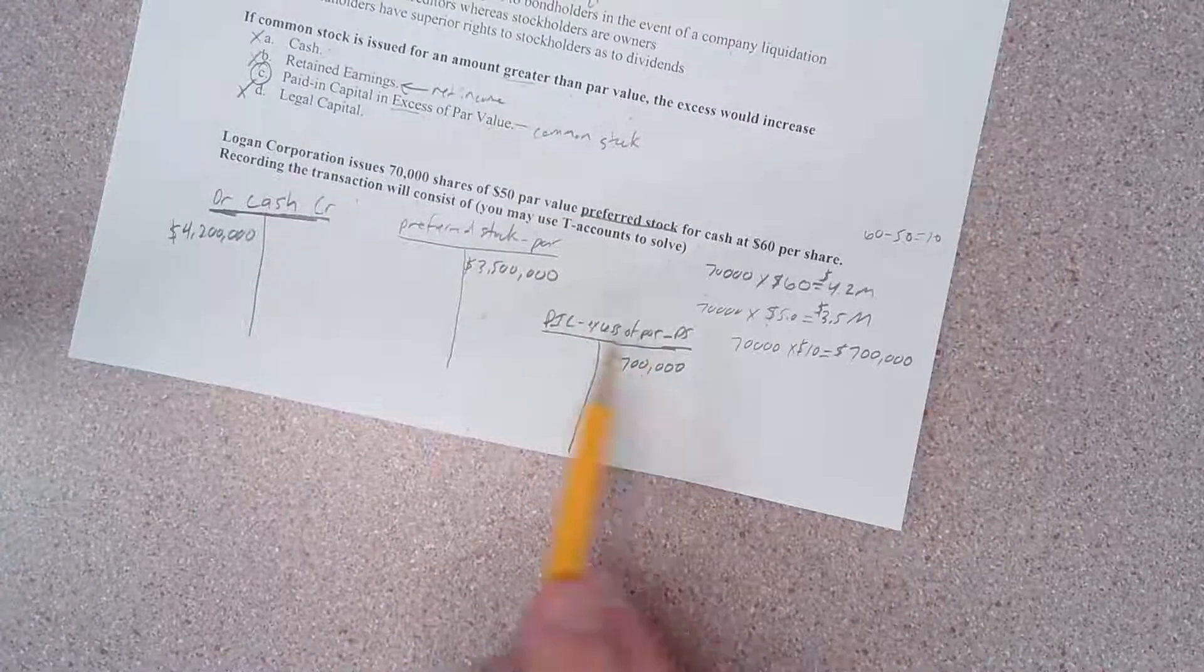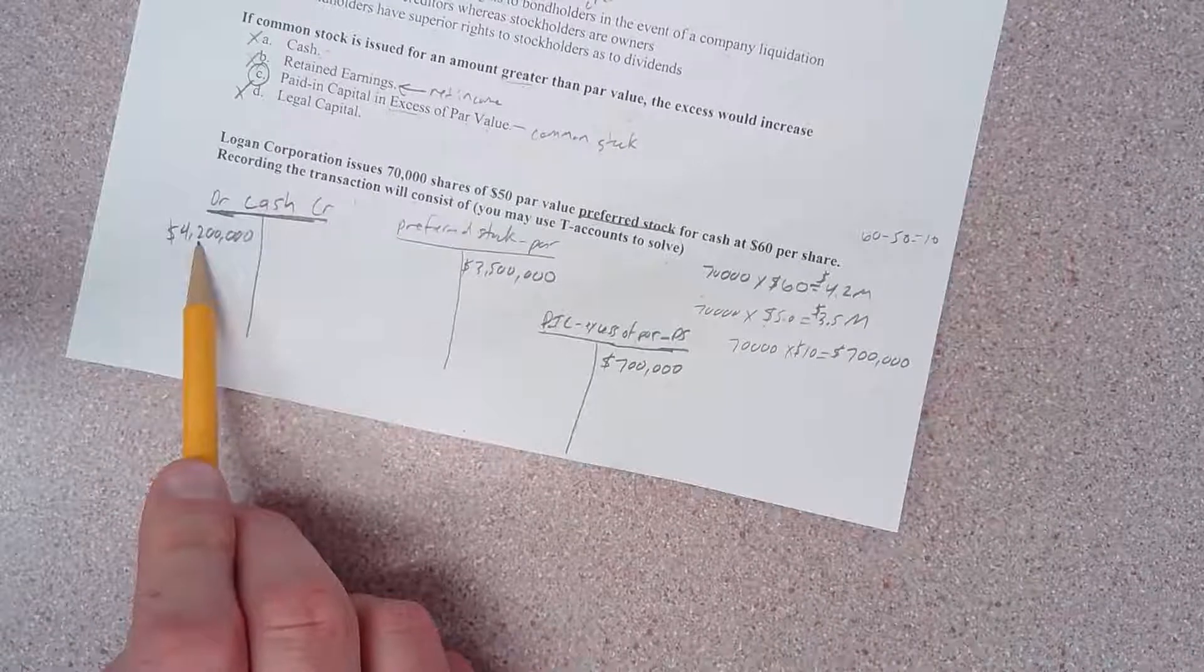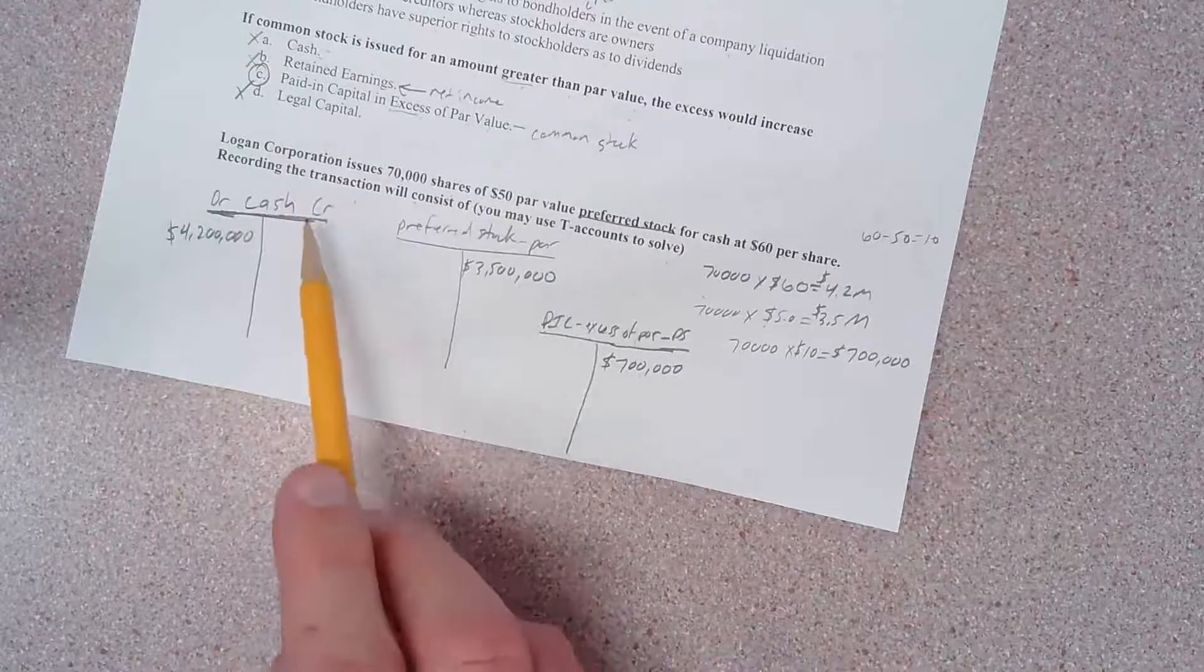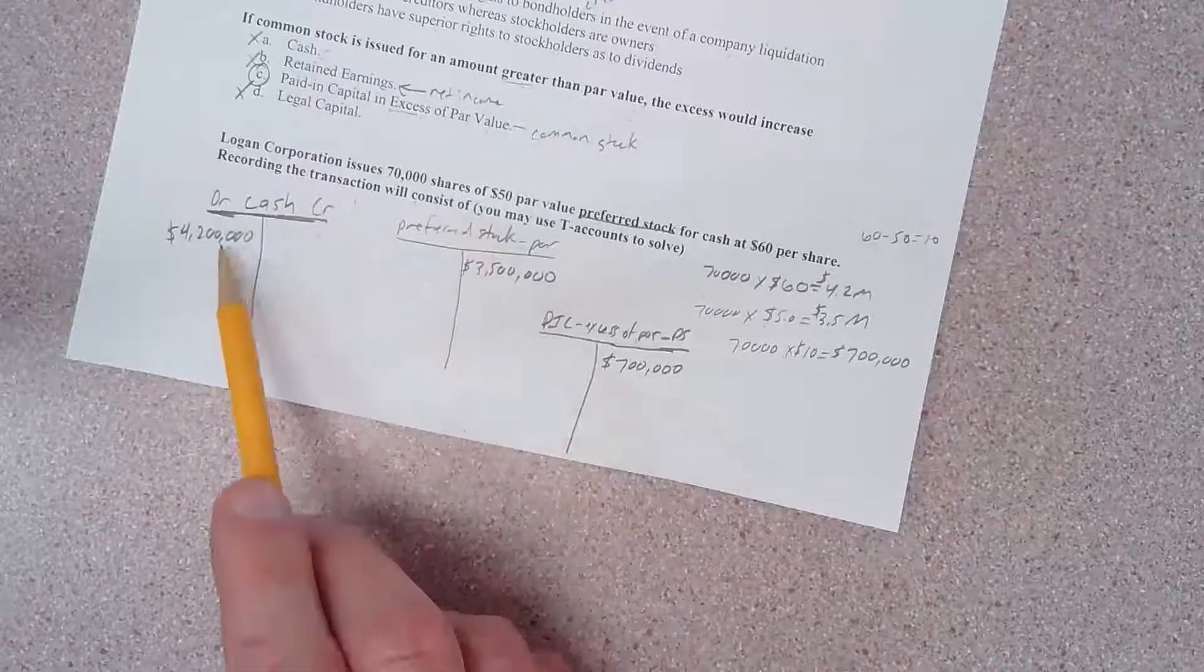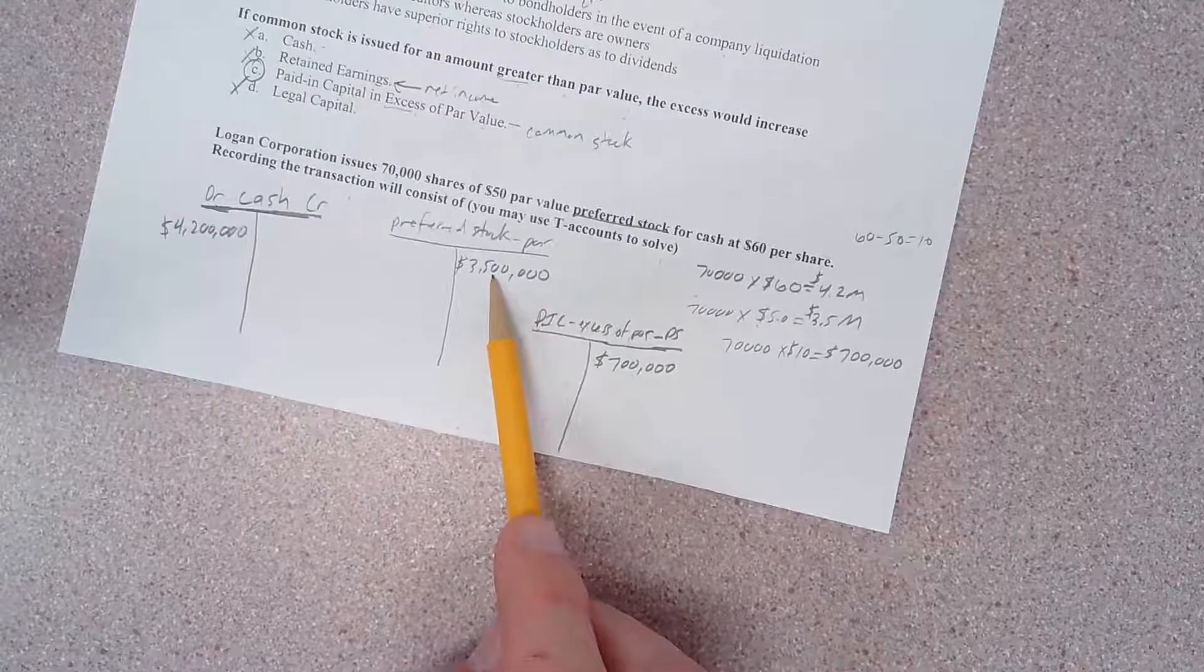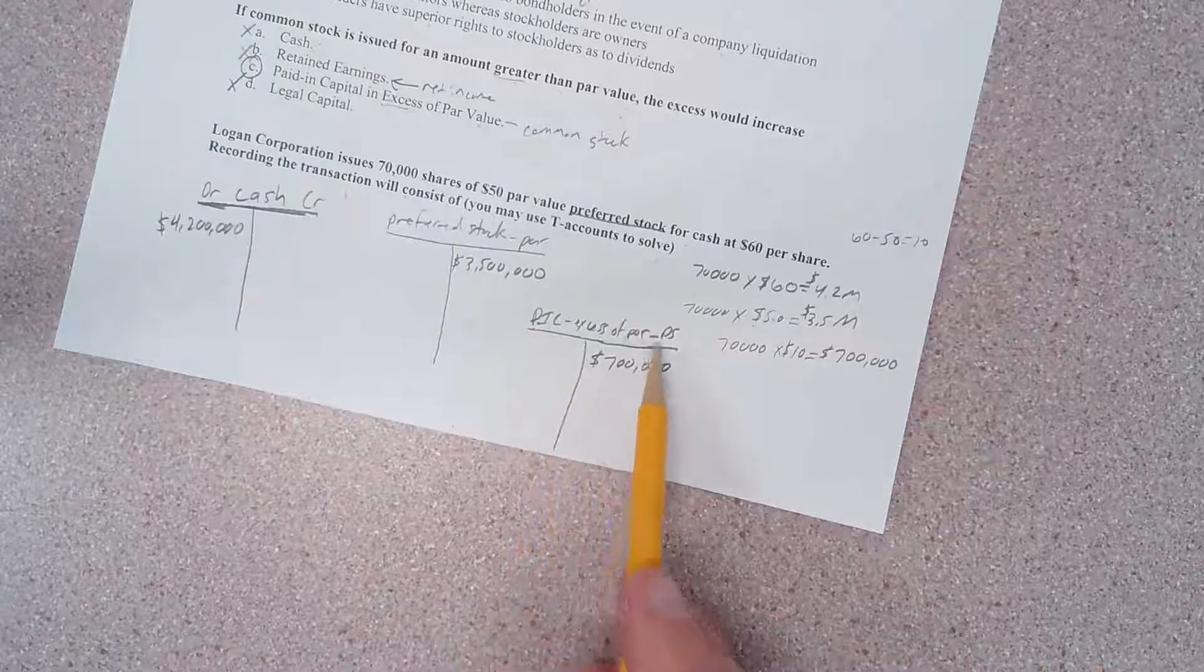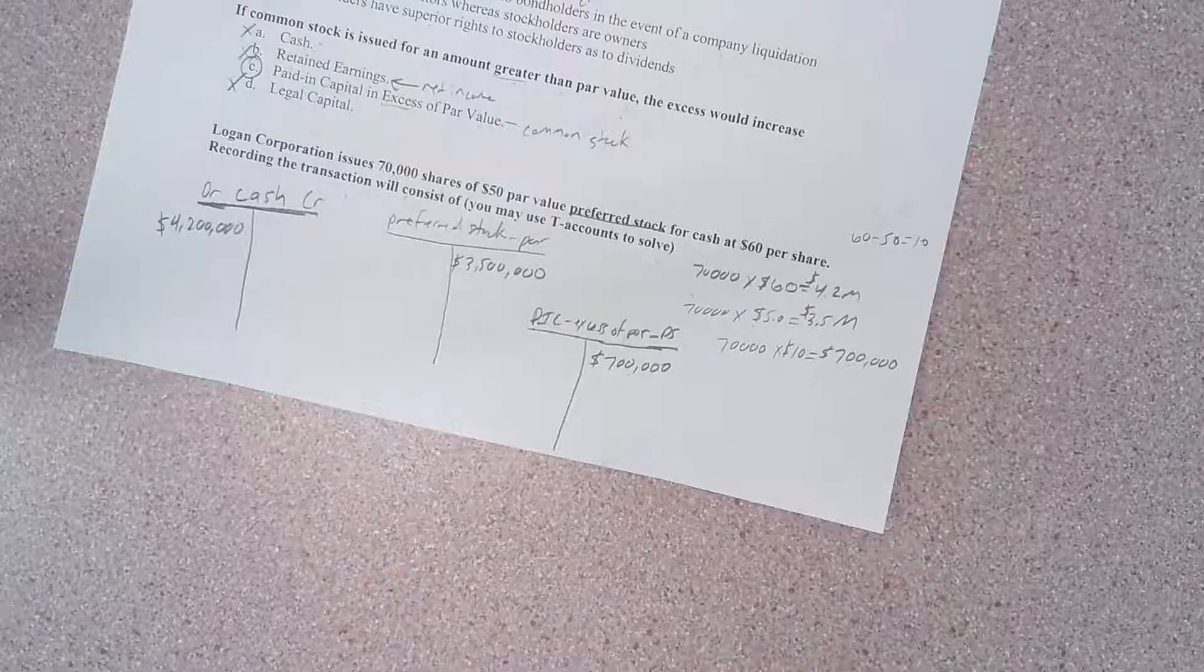Recording the transaction will consist of a debit to cash for $4.2 million, a credit to preferred stock par for $3.5 million, and paid in capital excess of par preferred stock for $700,000. I wonder why didn't he just make journal entries to show us?